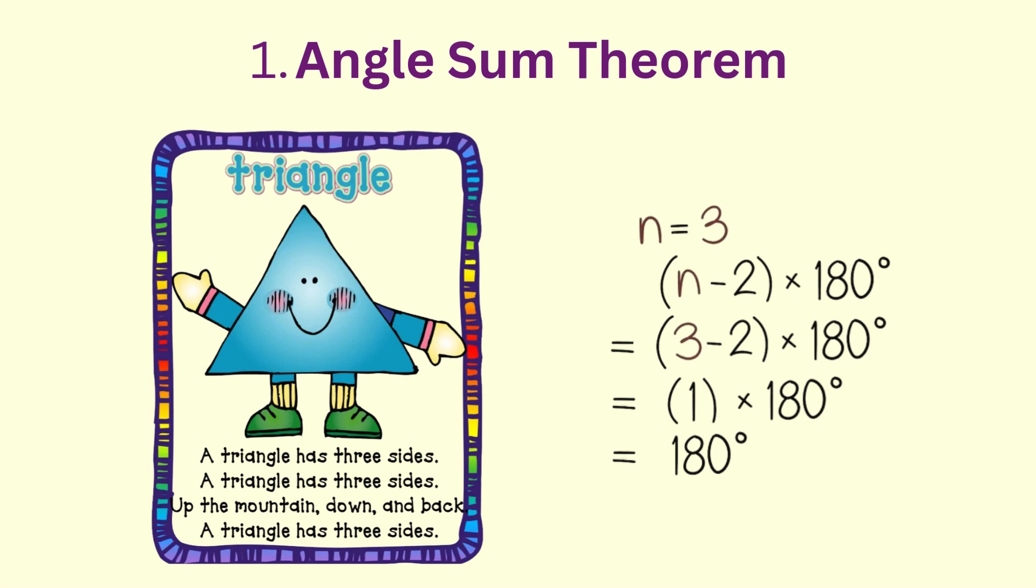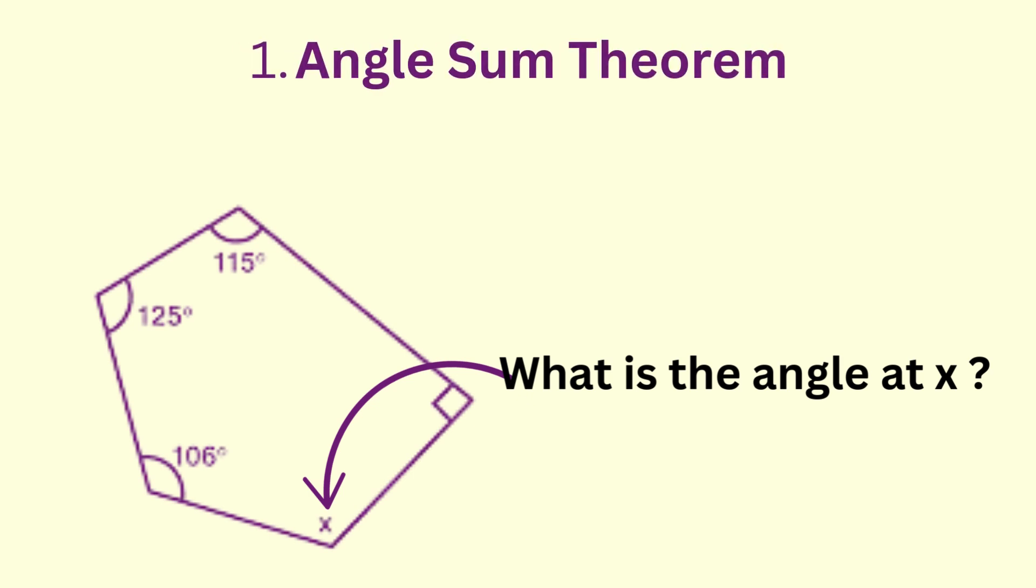For example, a triangle has three sides, therefore sum of angles inside a triangle is three minus two times 180, which is 180 degrees.